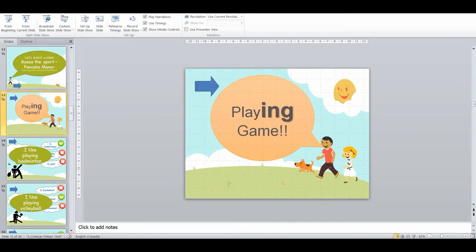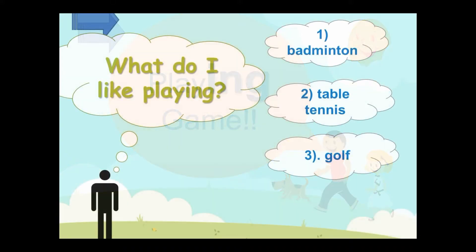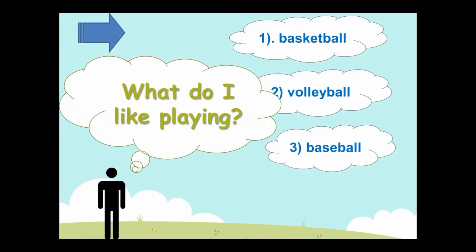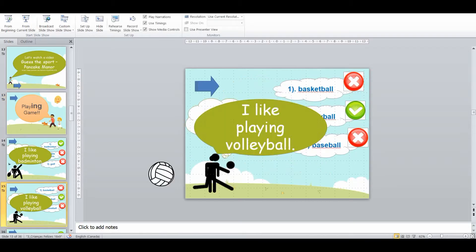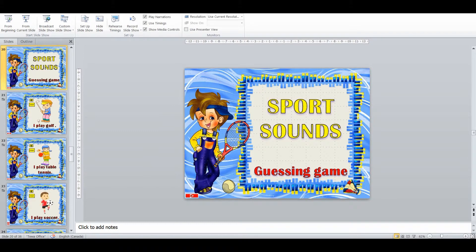Now we're looking at introducing a structure along with the vocabulary — I want to be using the '-ing' structure. So what do I like playing? They have to tell me, and they have to use the full sentence: 'I like playing blah blah blah.' We go through all of these different ones.